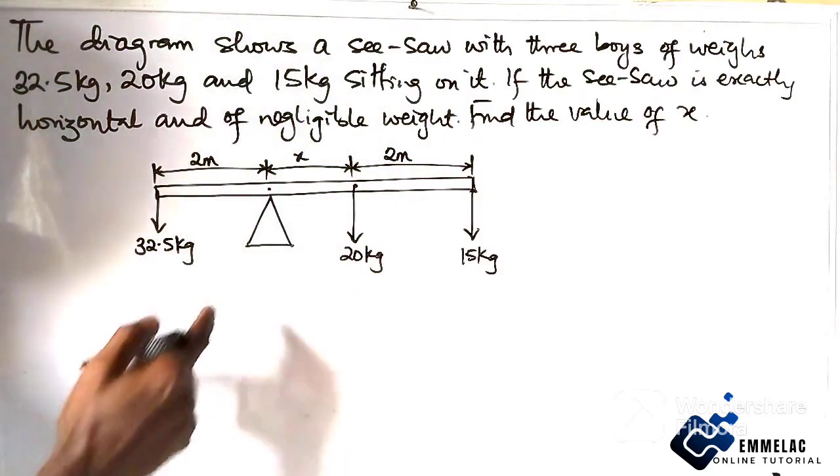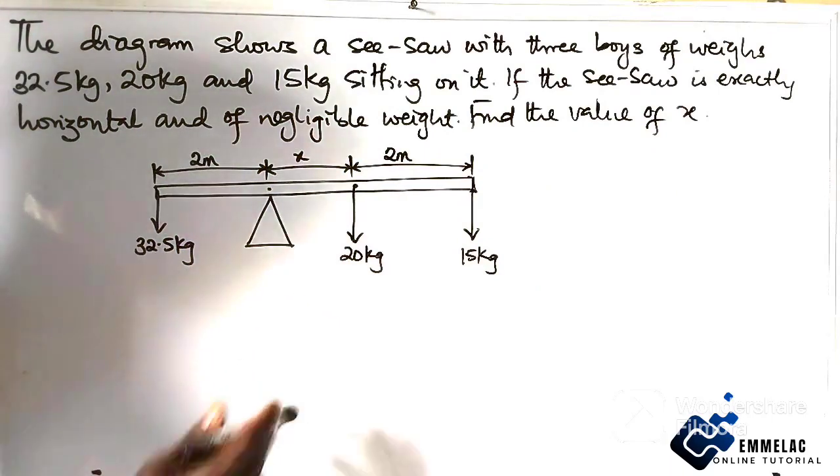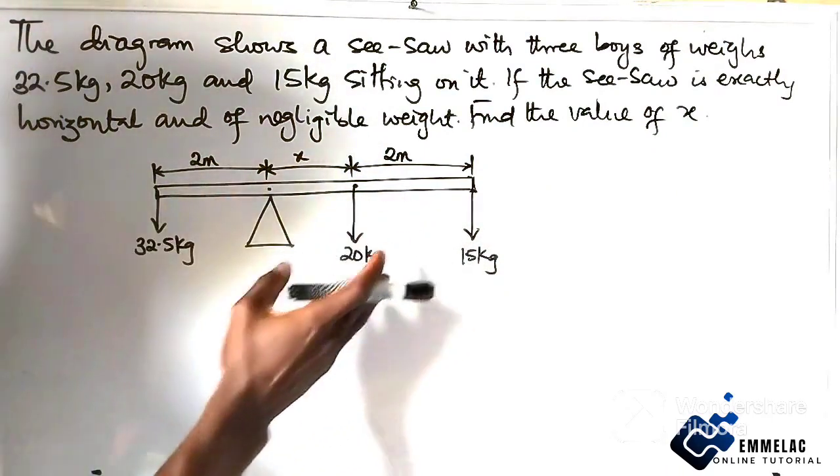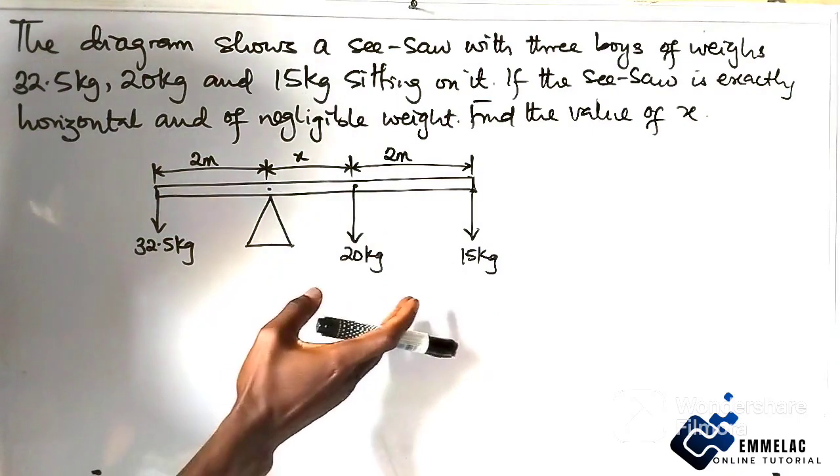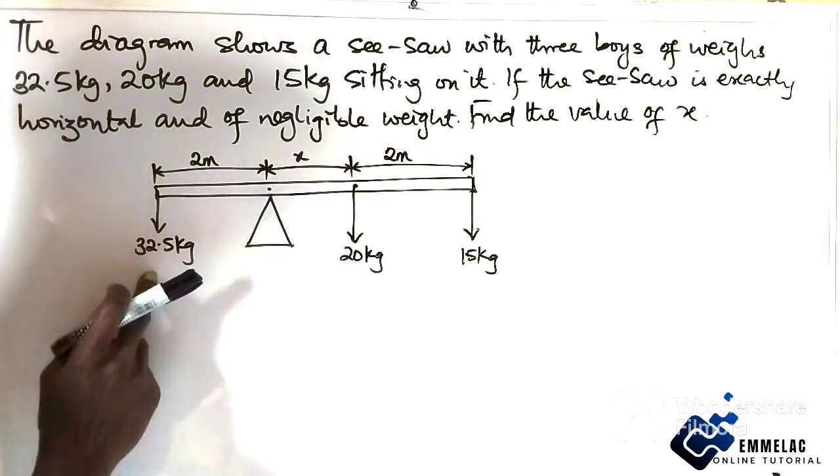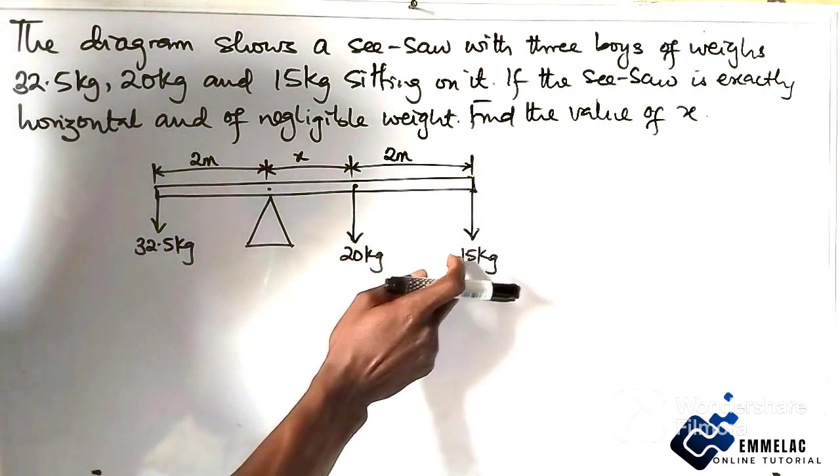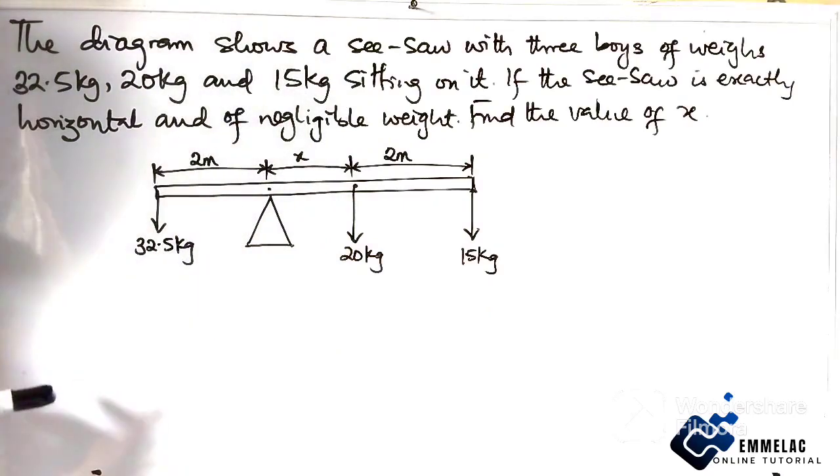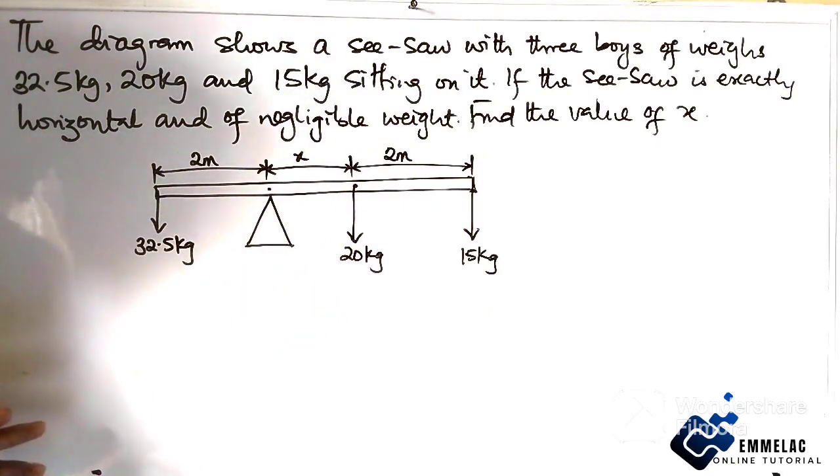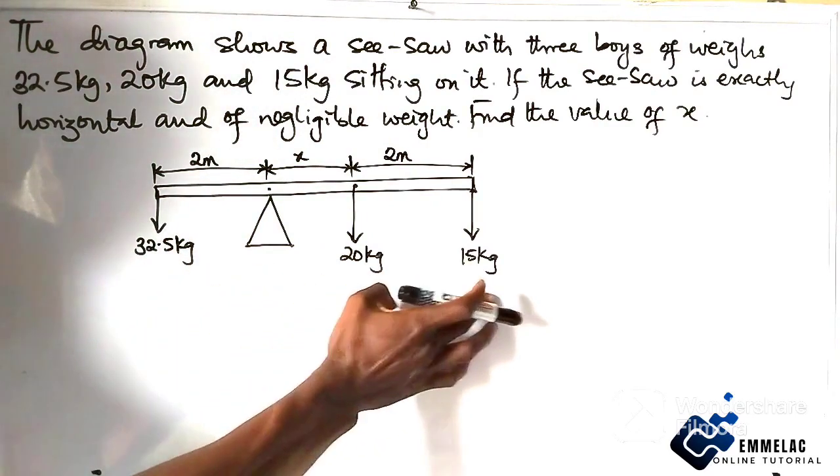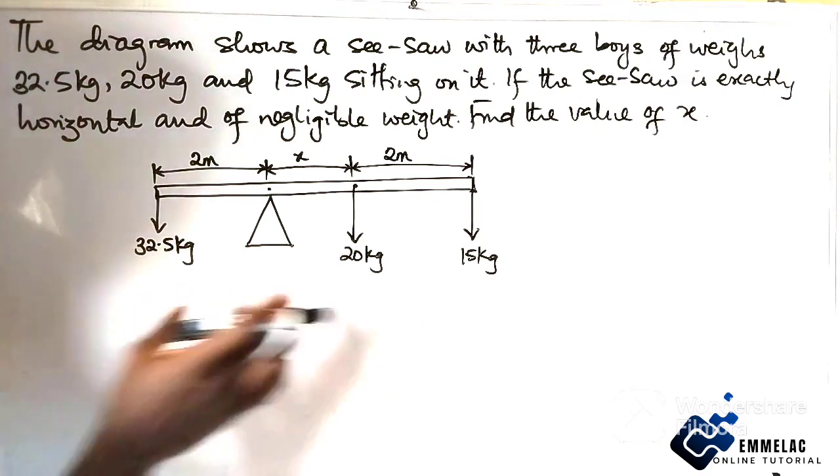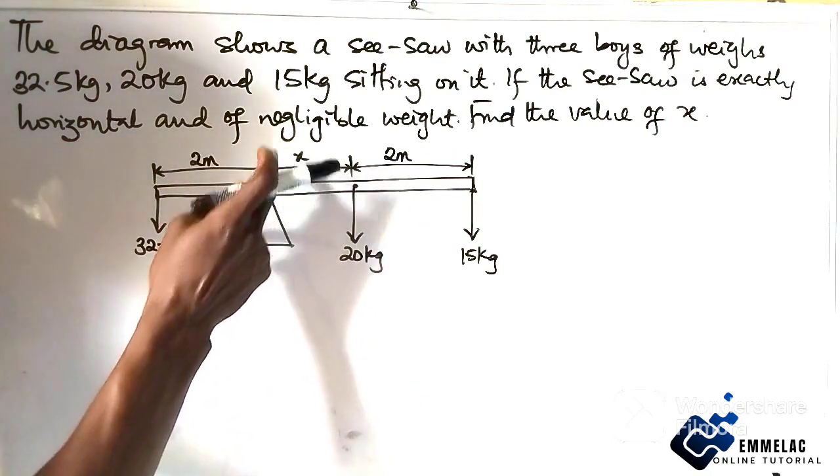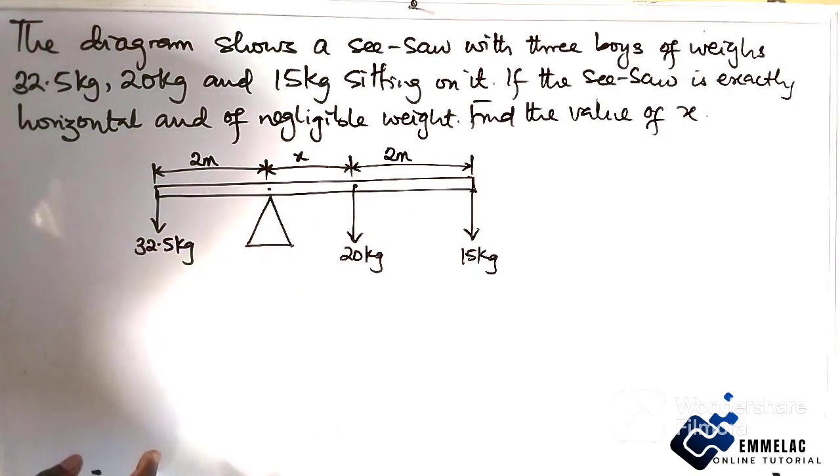Here's the diagram. Here's the pivot, the various distances of the boys, the first, the second, and the third, and here's the distance they all are from the pivot. What we need to ensure here is to balance the system. If we're able to balance the system, then we should be able to get the value of x.